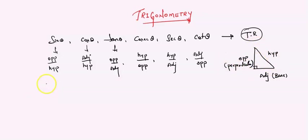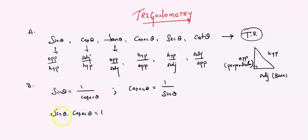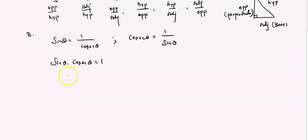I am giving a recap of all the things we are going to study. Let me cover the reciprocals. We know that sin theta equals 1 by cosecant theta. Similarly, cosecant theta equals 1 by sin theta. So, sin theta into cosecant theta equals 1. This is the first reciprocal you should know, because it is very important while solving problems.